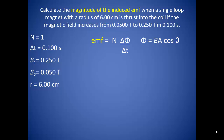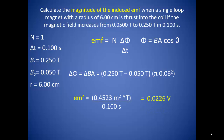Since we are not told otherwise, we can assume that the angle theta does not change. However, we are told that the magnetic field changes from 0.05 tesla to 0.25 tesla. We can multiply that times our area, which is pi r squared, to find our magnetic flux. Plugging these into the EMF equation gives 0.026 volts, which is not a large amount. However, we could increase this fairly easily by increasing the number of loops, using a stronger magnet, or changing the magnetic field faster.